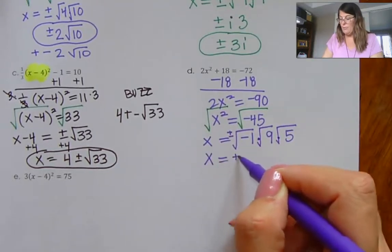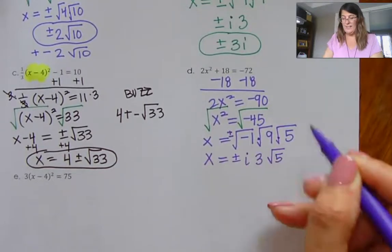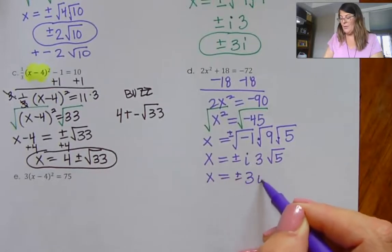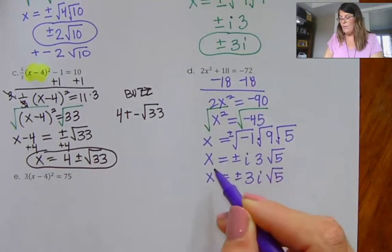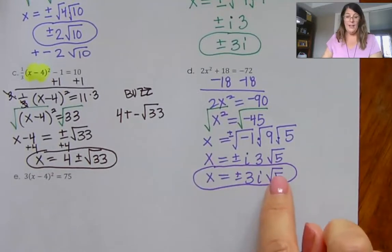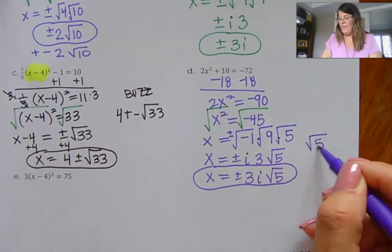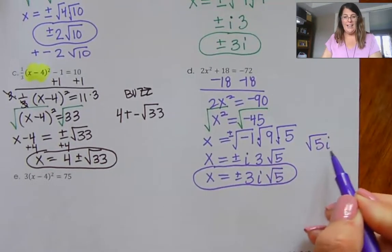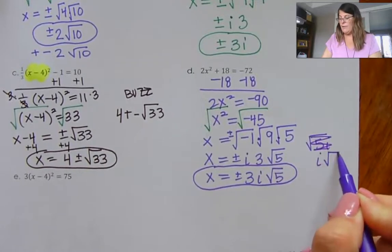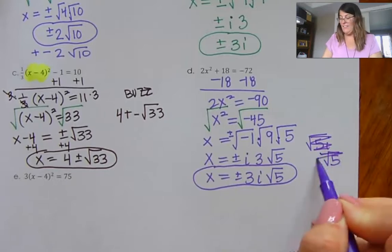So x equals plus or minus i, times 3, and the 5 doesn't simplify. My answer is plus or minus 3i square root 5. I always put the square root at the end, because if I handwrote square root of 5i, you might wonder if the i is on the inside or outside. So just to make it easier, we always put the i in front, or rather put the square root at the very last.